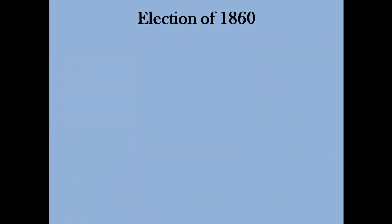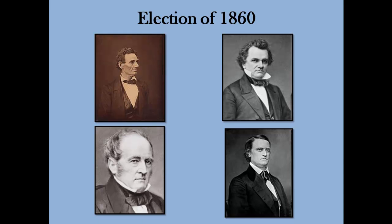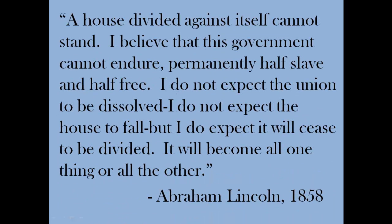Let's consider the election of 1860. The Democratic Party split between two candidates: Stephen Douglas, a Northern Democrat, and John C. Breckinridge, a Southern Democrat. Moderates nominated John Bell for the Constitutional Union Party, and Republicans nominated Abraham Lincoln. The Republican Party's platform in 1860 included no slavery in the territories, a strong tariff, and internal improvements in the West. Lincoln famously said: 'A house divided against itself cannot stand. I believe that this government cannot endure permanently half slave and half free. I do not expect the Union to be dissolved — but I do expect it will cease to be divided. It will become all one thing or all the other.' And it would be the election of 1860 that would test Lincoln's idea.